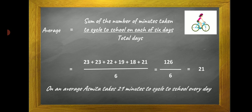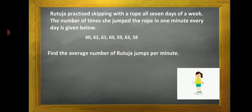Therefore, on an average, Asmita takes 21 minutes to cycle to school every day.